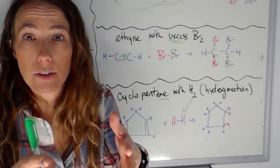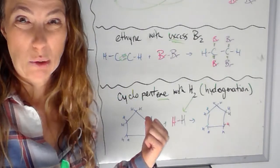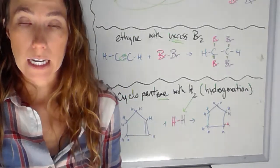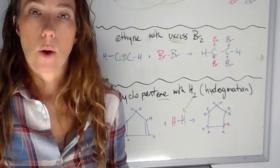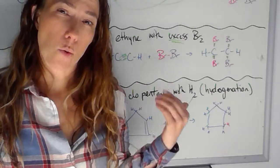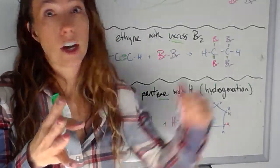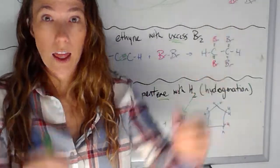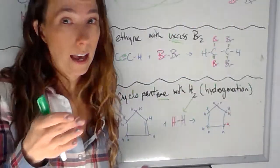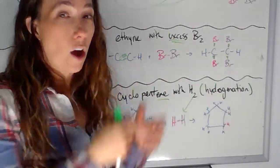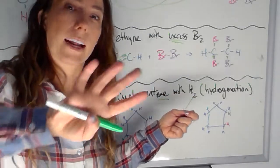So that's addition reactions. We just add players to the field because we're already short players, right? It's unsaturated. And so I can just add my players to the field. And the awkward thing about this one is that there's lots of different situations where I add H-H, H-Cl, H2O, Cl-Cl. But in every case, I break that double bond and I grab something.